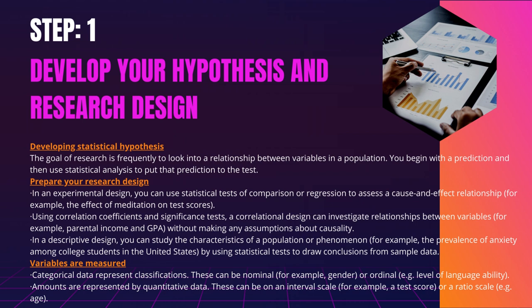Experiments influence variables directly, whereas descriptive and correlational studies only measure variables. In an experimental design, you can use statistical tests of comparison or regression to assess a cause-and-effect relationship, for example, the effect of meditation on test scores. Using correlation coefficients and significance tests, a correlational design can investigate relationships between variables, for example, parental income and GPA, without making any assumptions about causality.